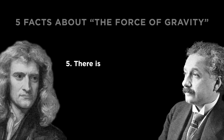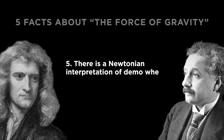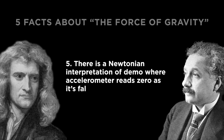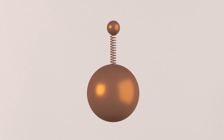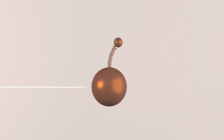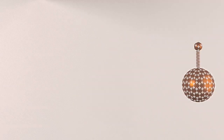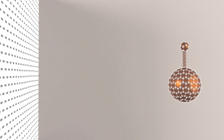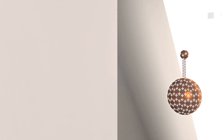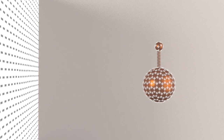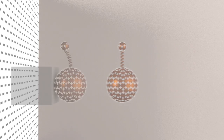Number five: there is a Newtonian interpretation of that demo where I dropped the accelerometer and it reads zero as it's falling. Consider a simplified accelerometer modeled as two different masses attached by a spring. If we apply a force to the larger mass, the system is accelerated and the smaller mass drags behind inertially. But now let's give the whole thing a uniform electric charge, and let's bring in a wall that carries the opposite charge. The accelerometer will accelerate toward the wall, but since all of its components are being acted on uniformly, there's no acceleration reading. Finally, it hits something and stops.